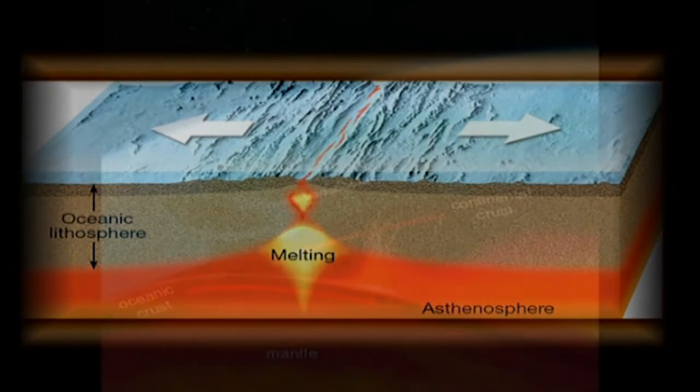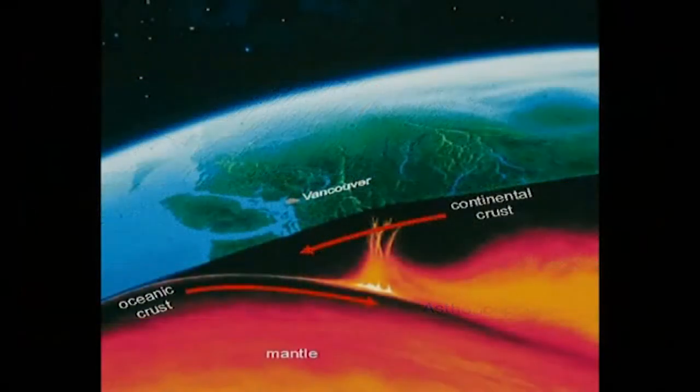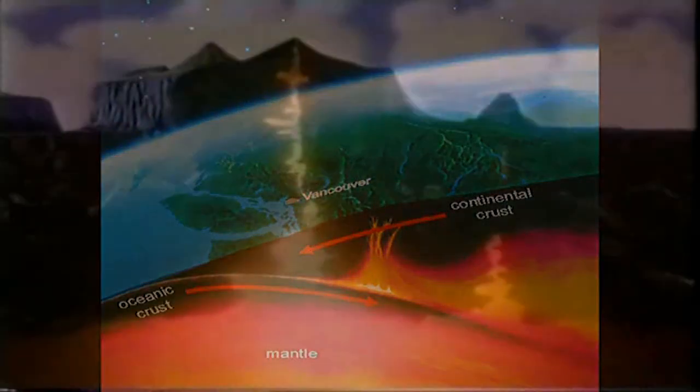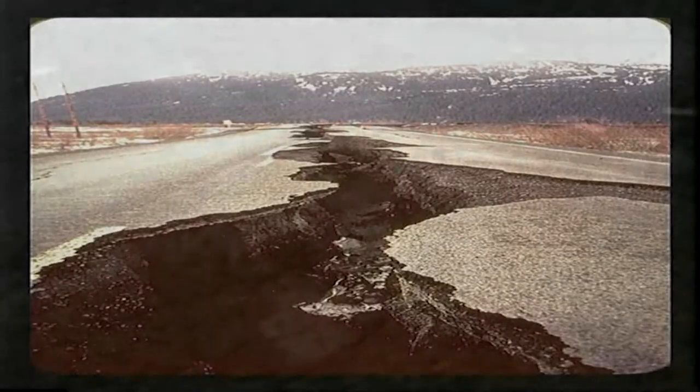Planet Earth in its crustal zones experiences violent forces which are collectively known as endogenetic forces. They are emanating from below the surface of the Earth. Two of them are earthquakes and volcanoes. In many cases, volcanoes precede earthquakes and they are often associated with each other.